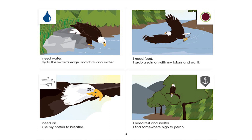In the lower right hand corner there's a shield with an anchor on it — that icon means shelter and protection, the place the eagle goes to sleep and for protection. The words say: I need water — I fly to the water's edge to drink cool water. On the right hand side: I need food — I grab a salmon with my talons and I eat it.